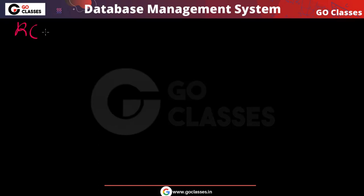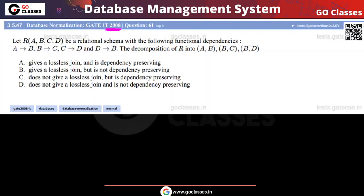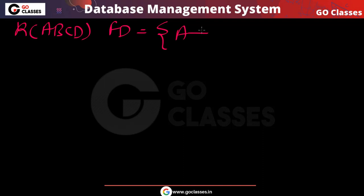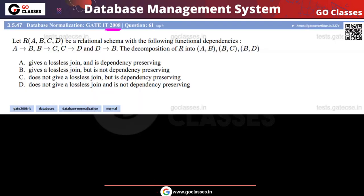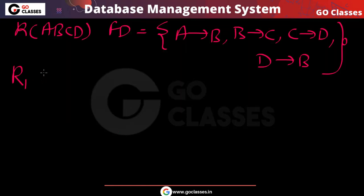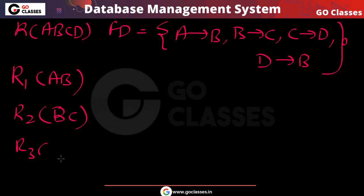The relation given is R(A, B, C, D) and the functional dependencies are: A→B, B→C, C→D, and D→B. The decomposition given consists of three sub-relations: R1 = AB, R2 = BC, and R3 = BD.